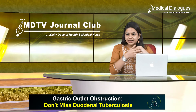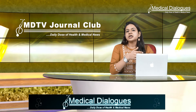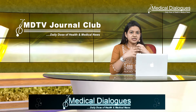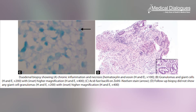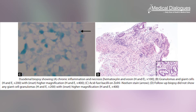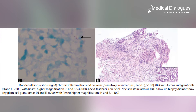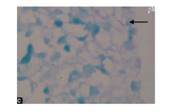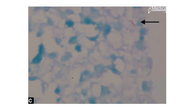A repeat endoscopy was conducted to obtain a specimen for biopsy, keeping in view the findings of gastric outlet obstruction. Again, eight biopsies were taken from this region. The histopathological study now revealed features of chronic inflammation, necrosis, giant cells, and granulomas. On Ziehl-Neelsen stain, the tissue specimen was positive for acid-fast bacillus.